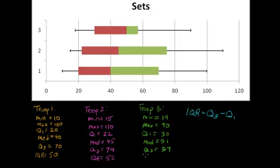And then our last one, the IQR. We would take Q3 for troop three, 57 minus 30 and get 27. Not surprisingly, this one has the lowest IQR, but we could visually see that also.